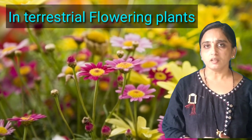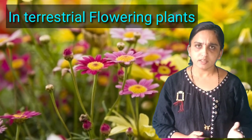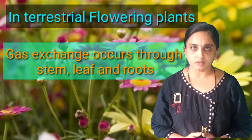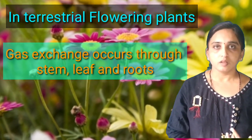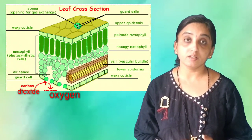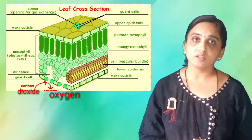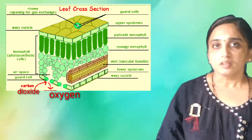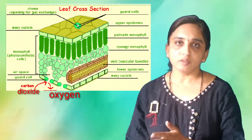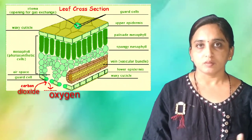In case of terrestrial flowering plants, this exchange occurs through stem, leaf, and roots. If we see the internal structure, there are air spaces present in the plants, and these air spaces are continuous with each other. So there is a continuous flow of gases from one part of the plant to the other part.